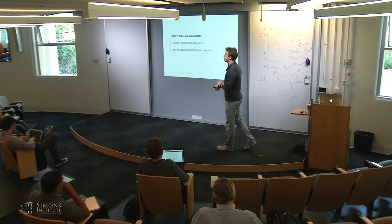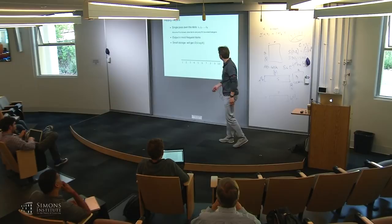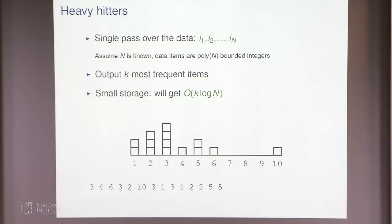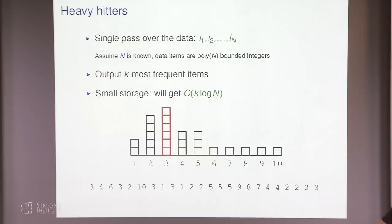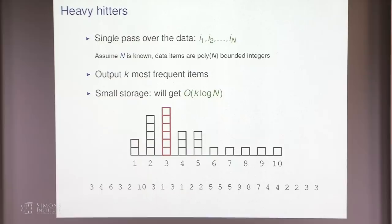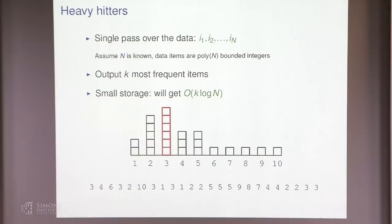Heavy hitters and CountSketch. We are given a stream of data items and a parameter k. Our task is to figure out the k most frequent items in this data stream. One way of solving this would be to store the entire data stream, but we would like to have storage on the order of k log n, where k is the number of elements we're looking for and n is the universe size. This sort of space complexity will only be possible under some natural assumption on the frequencies of elements in the stream.